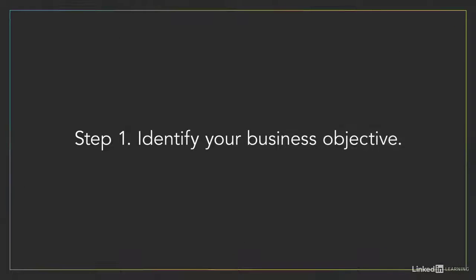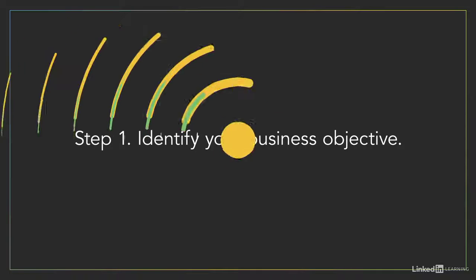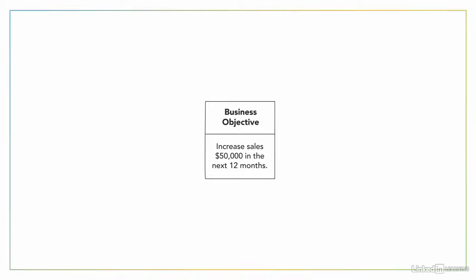The first step is to identify your business objective. You can ask your president, chief executive officer, chief financial officer, or whoever is the appropriate person at your company for this direction. As an example, let's use one of the most common business objectives: to increase sales. You can input that information into this template. Let's say it's to grow sales $50,000 in the next 12 months.